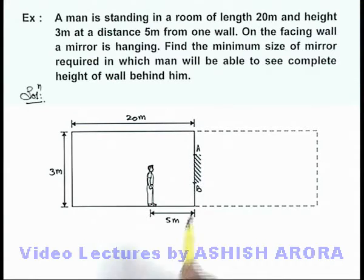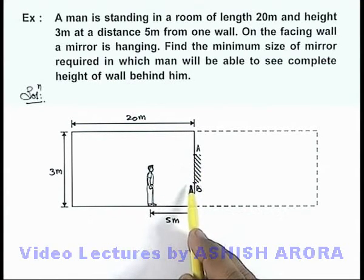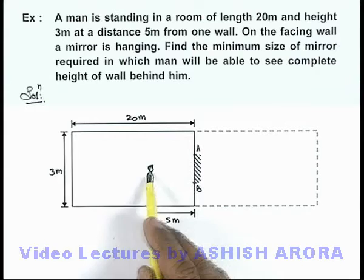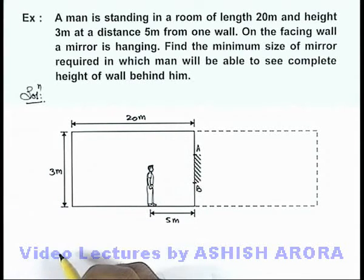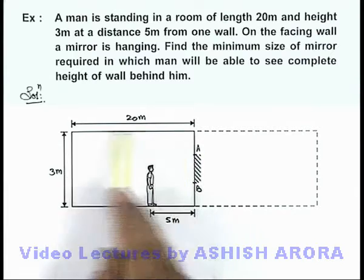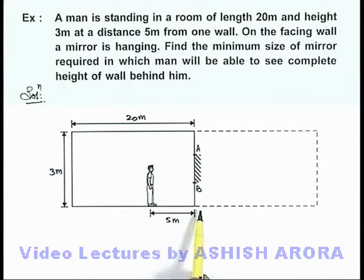Here if we consider that AB is the required length of mirror in which the man will be able to see the wall behind him which is of 3 meters, then in that situation let us consider the image of the whole room which is produced behind the mirror. Then in this situation we can see